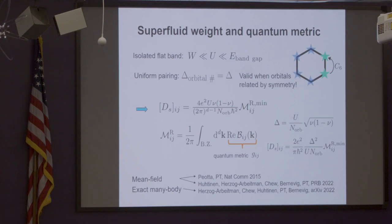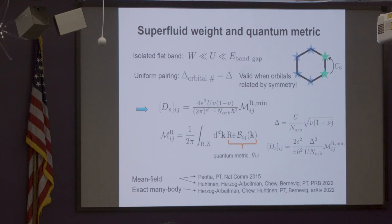In the flat band you can show that Δ becomes a certain expression, and if you insert this you can see that the superfluid weight is proportional to Δ² divided by U times the quantum geometry part. Of course this is just a limit, but it's nice to take some limit and see some analytical result to get intuition — then you can do the full formula numerically.